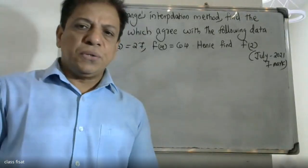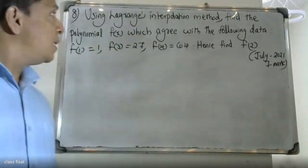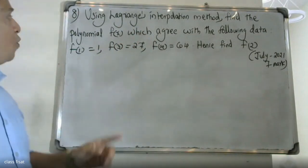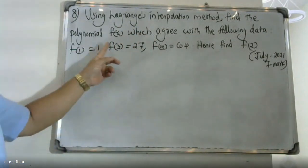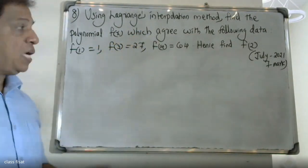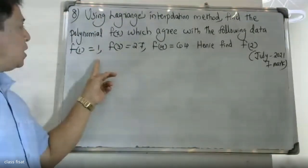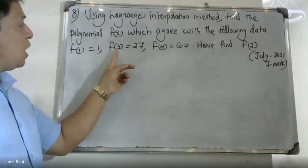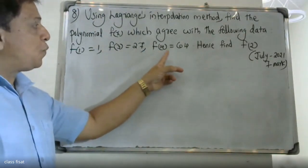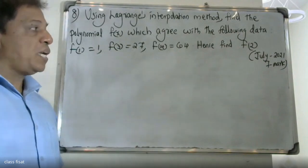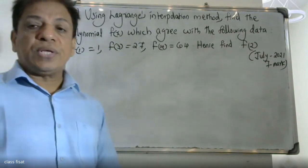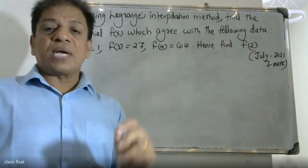Good morning students. The question is: using the Lagrangian interpolation method, find the polynomial f(x) which agrees with the following data — f(1)=1, f(3)=27, f(4)=64. Hence find f(2).